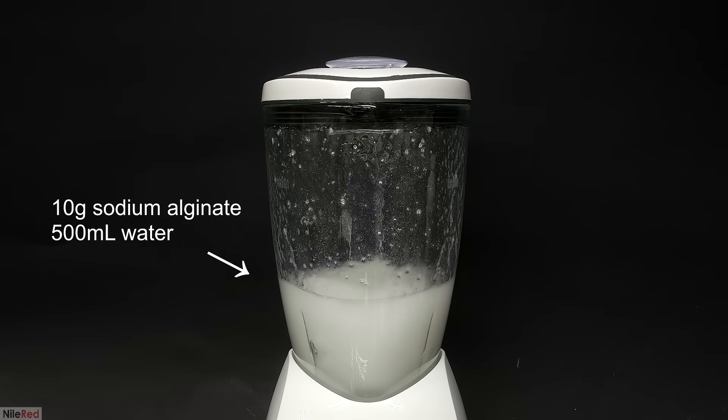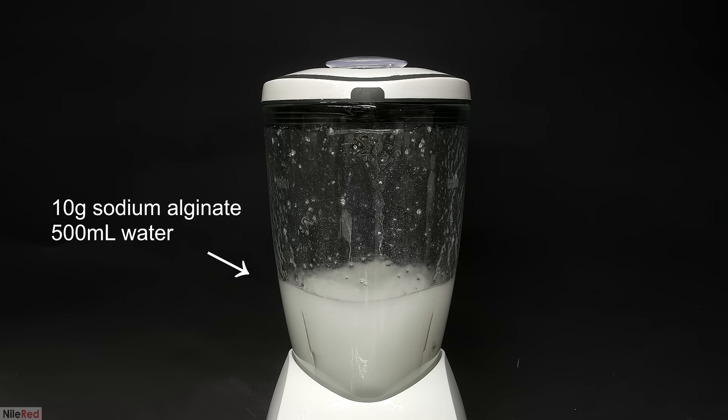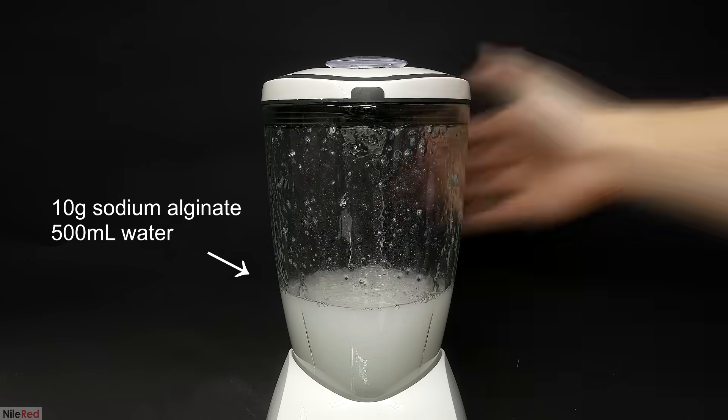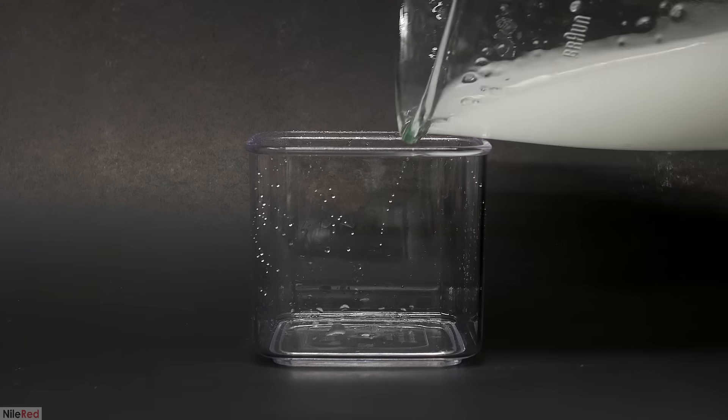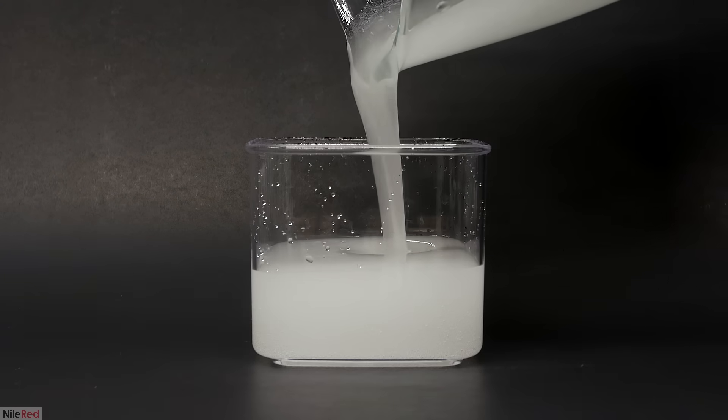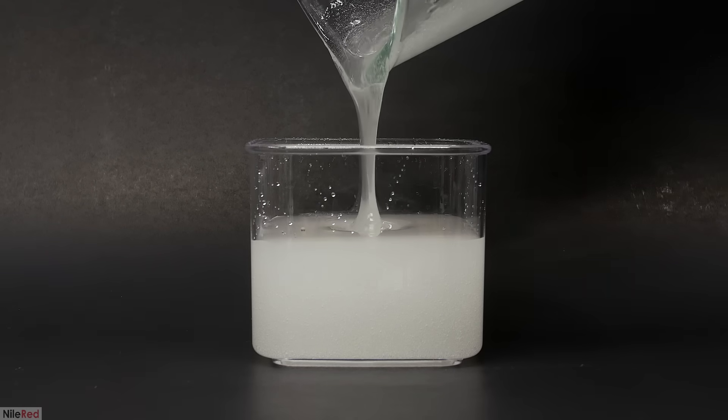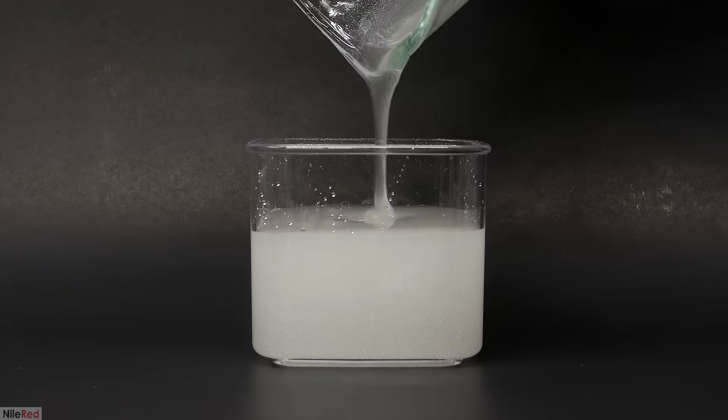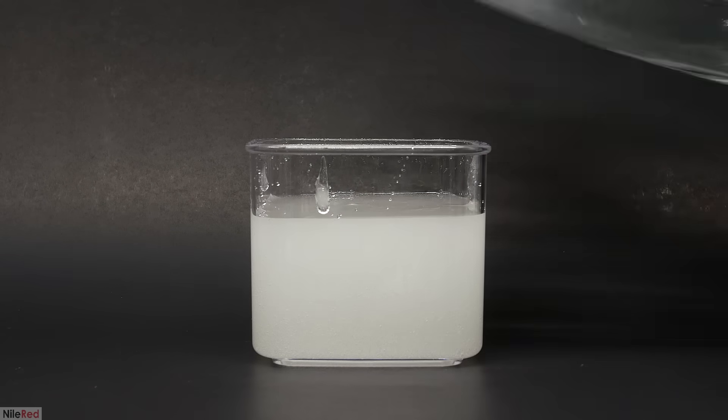So in here I have about 10 grams of sodium alginate and 500 mils of water, and I mixed it for about a minute. When it was done, I poured it into this smaller container, and you can see it was quite goopy. It's also white because of a whole bunch of air bubbles that were introduced by the blender.